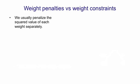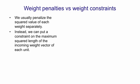Instead of putting penalties on the weights, we could actually use weight constraints. What I mean by that is instead of penalizing the squared value of each weight separately, we put a constraint on the maximum squared length of the incoming weight vector of each hidden unit or output unit.